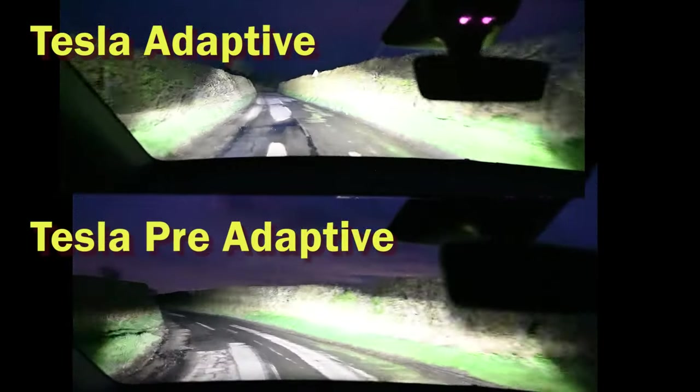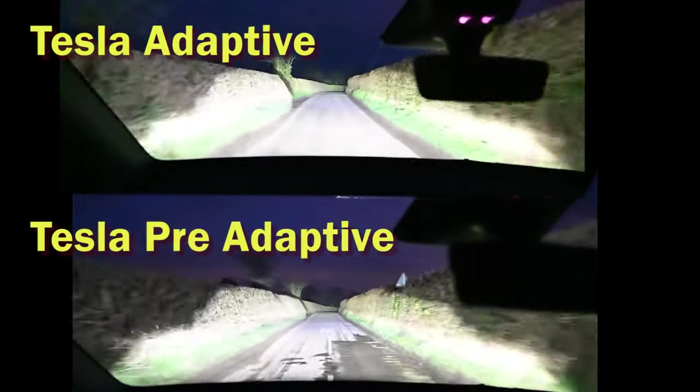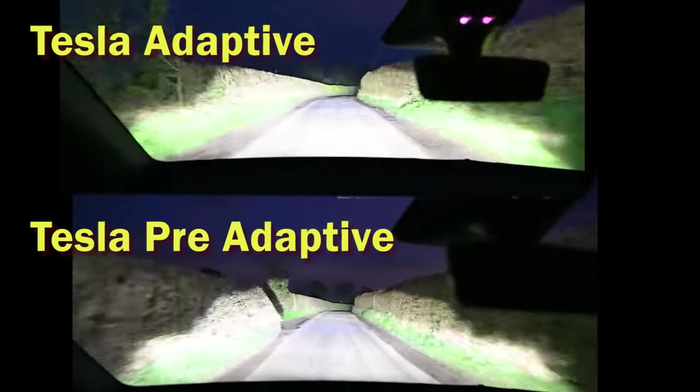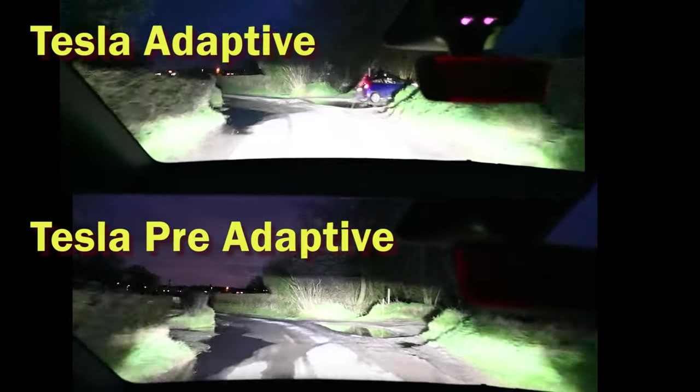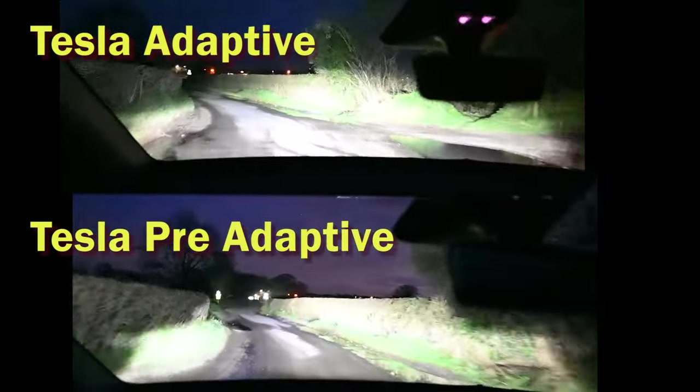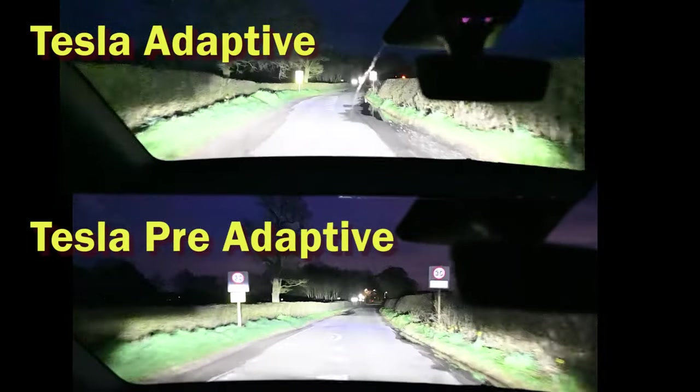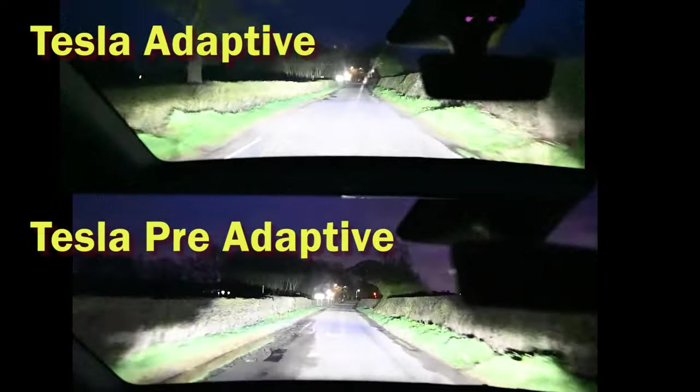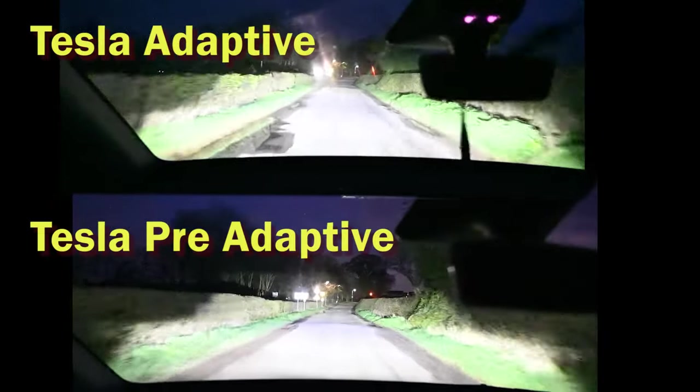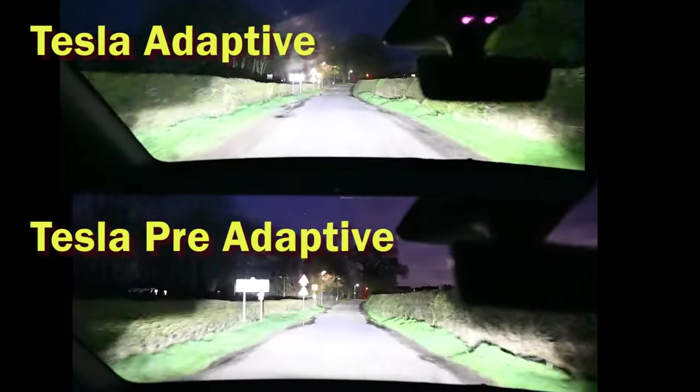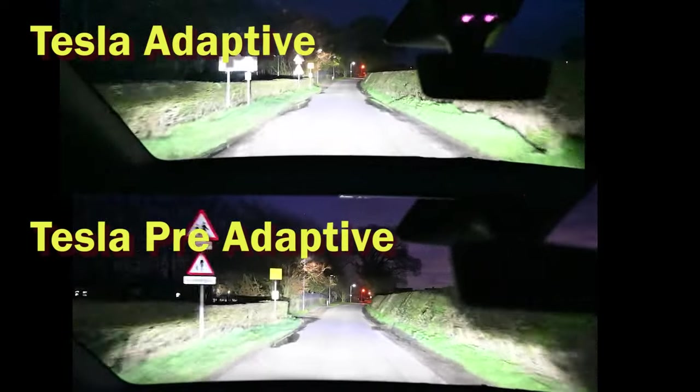What we're seeing with the Tesla, however, is basically full beam. We're now going to enter into a built-up area. It's street lit, it's still fairly rural. And we can see as we enter the village, the headlights are still both on full beam or high beam.